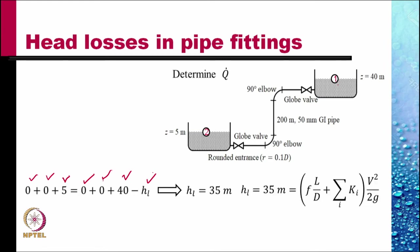The head loss is given by this formula. For the GI pipe epsilon by d can be determined. Epsilon is 0.15 millimeter for galvanized iron pipe. The diameter of the pipe is 50 millimeter. So, epsilon by d value is 0.003.